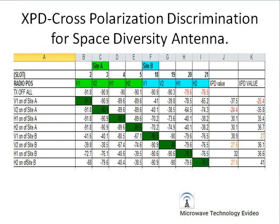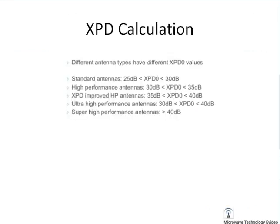The XPD value range varies depending on the antenna type. Typically it is 25 to 30 dB, but for a high performance antenna the XPD value increases to 30 to 35 dB. For a super high performance antenna, the XPD value is approximately 40 dB.